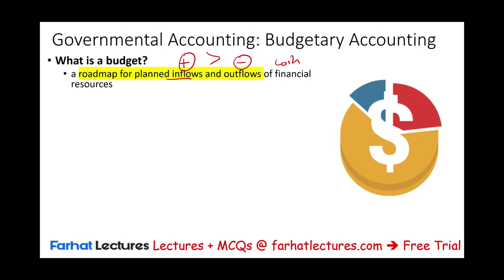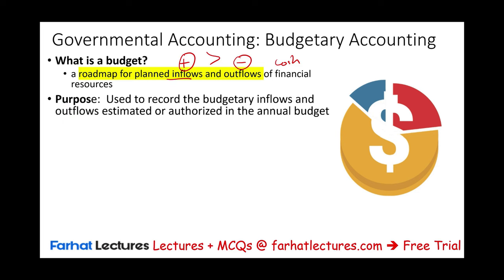What is the purpose of a budget? It's used to record budgetary inflows — what you plan. Plan is a roadmap. And plan budgetary outflows. Remember, when you are planning, those are estimated amounts or amounts that are authorized in the annual budget.